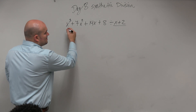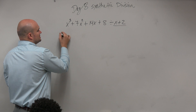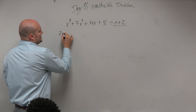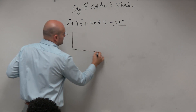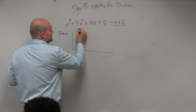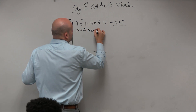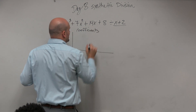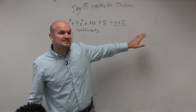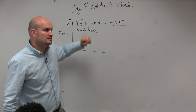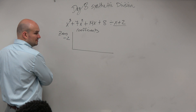We want to make sure we're using descending order. When doing synthetic division, you're going to take the zero and put it on the outside. Then take the coefficients of the dividend and write them over here. So if x plus 1 is my factor, my zero is negative 2.